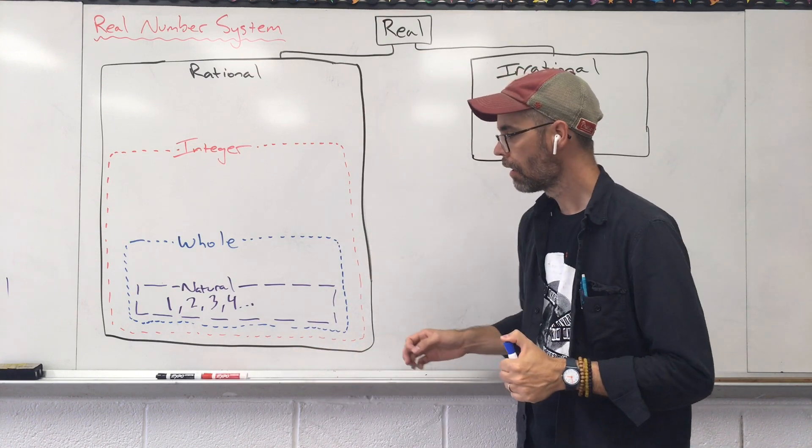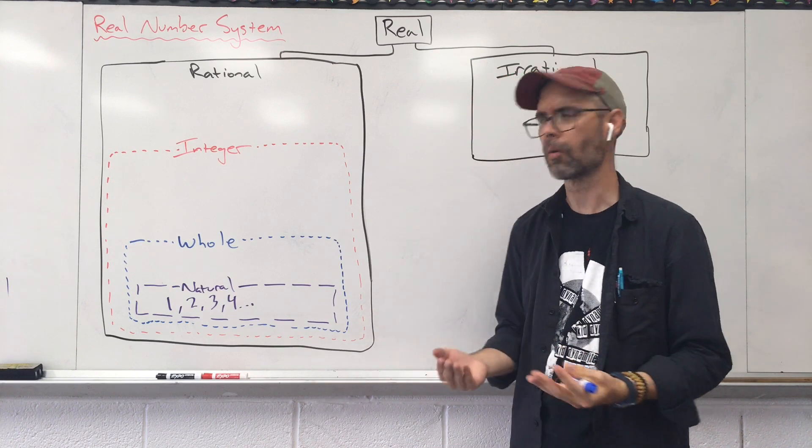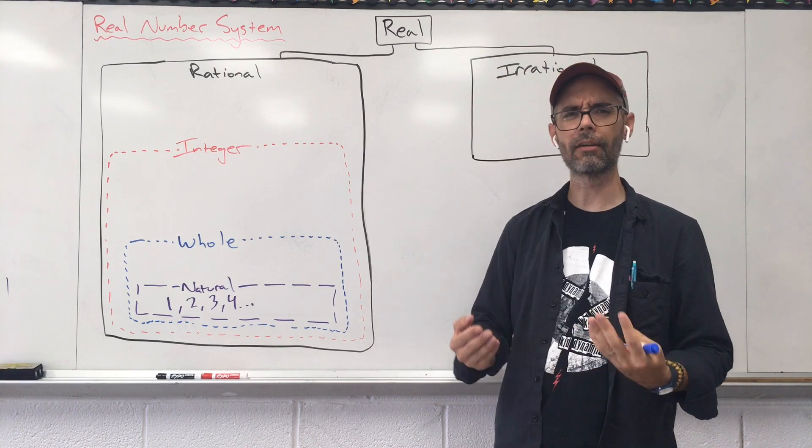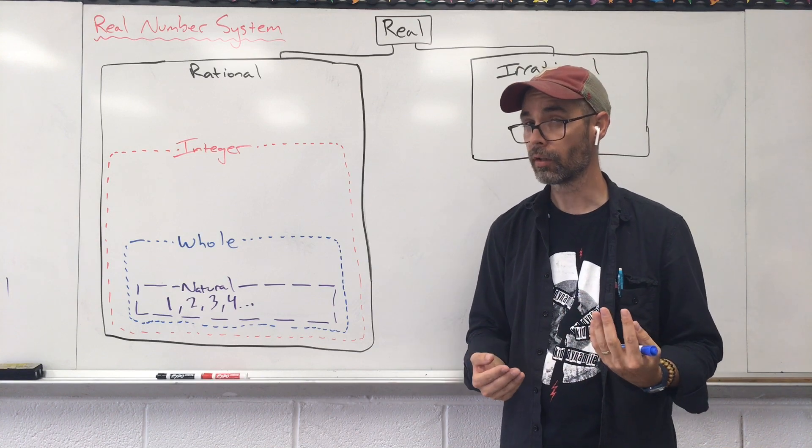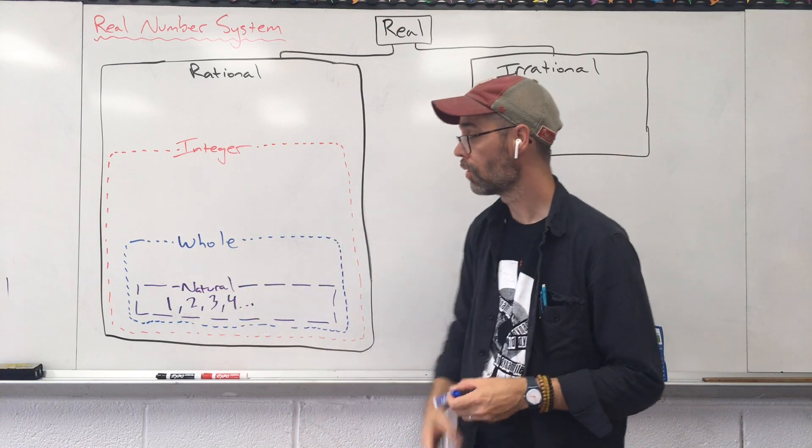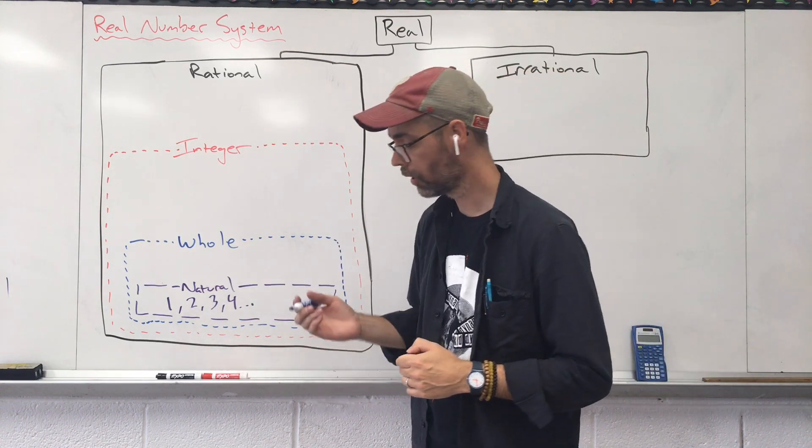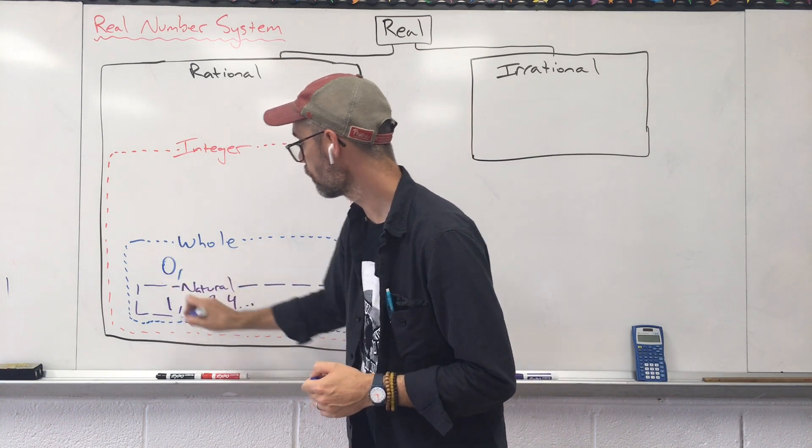Whole numbers. Now, if you're the type of person that would just say, no, I don't count by the number one. I don't start there. I start with zero. It's weird. Weird starts with a W. Whole starts with a W. We've got a whole list of new numbers now. The whole number starts with zero.